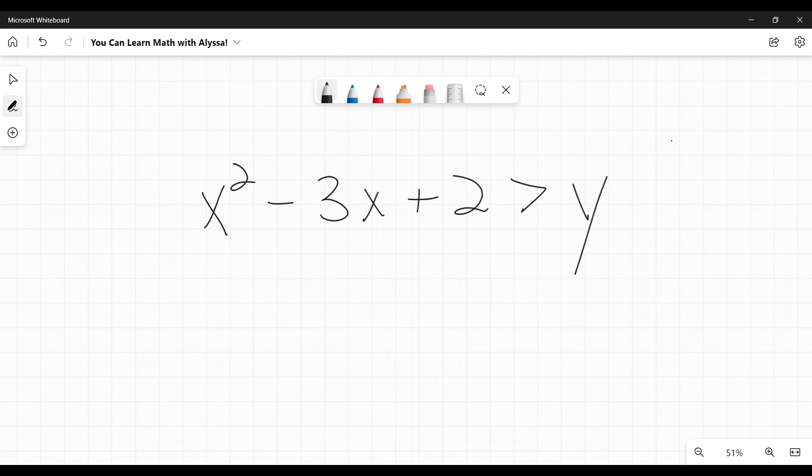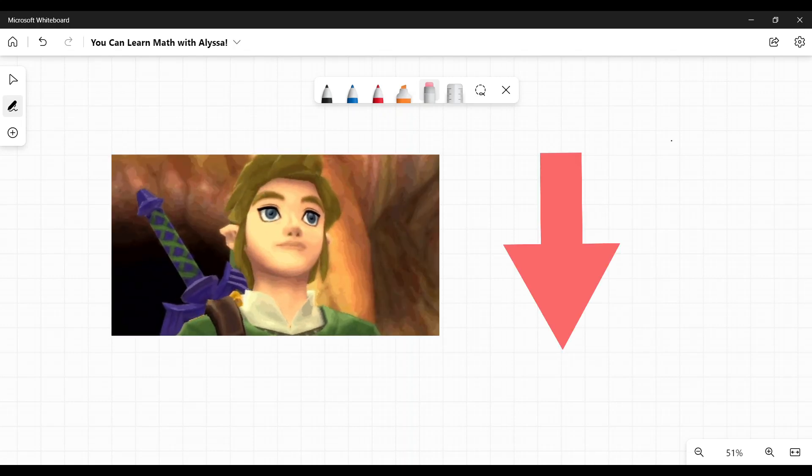Graphing, the one we're doing today, is when it is greater than, less than, greater than equal to, less than or equal to y. When you have an x and a y in this equation. So if you're looking for solving quadratic inequalities, that is a different video. Link is in the description below. This is graphing.